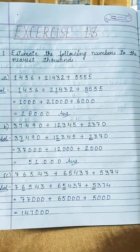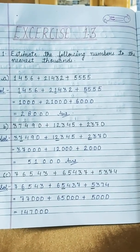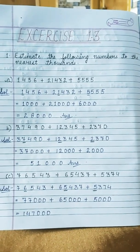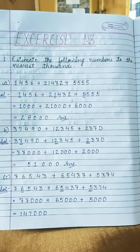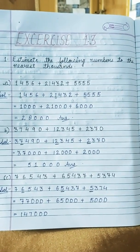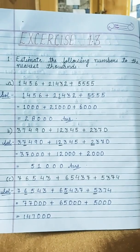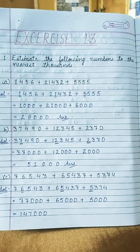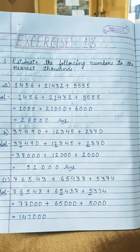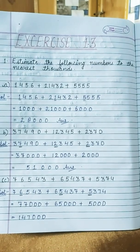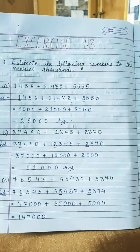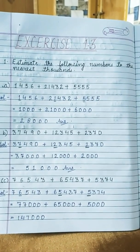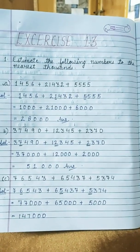Today in this video we will do exercise 1.3. Question number 1 is: estimate the following numbers to the nearest thousand. We do estimation with the help of rounding off, so we will estimate the numbers by rounding off to the nearest thousand.